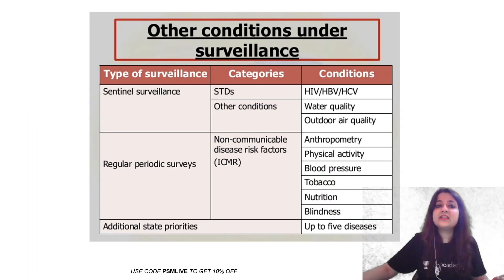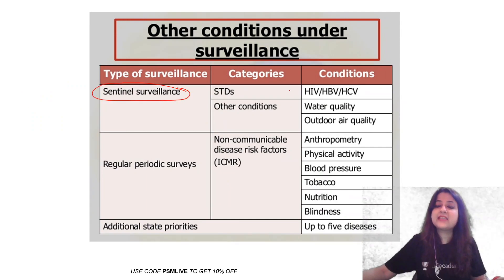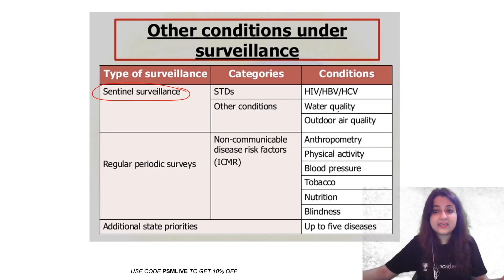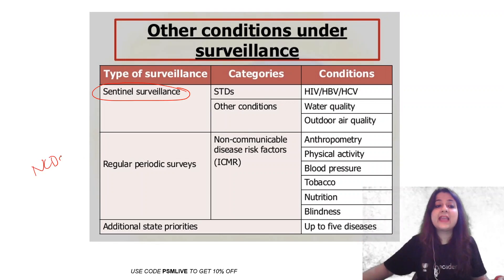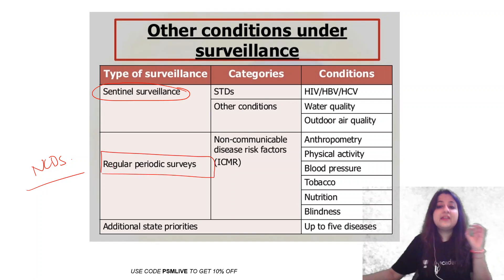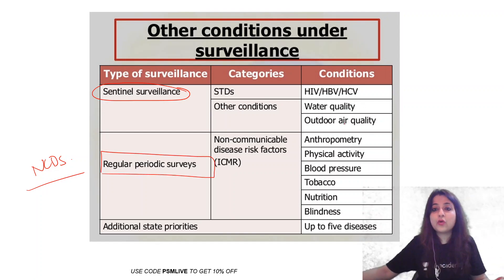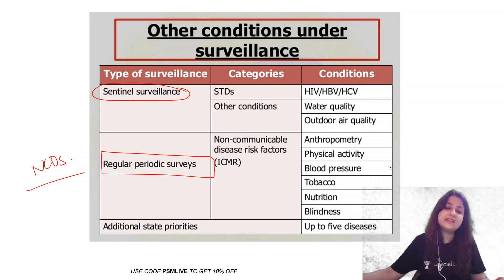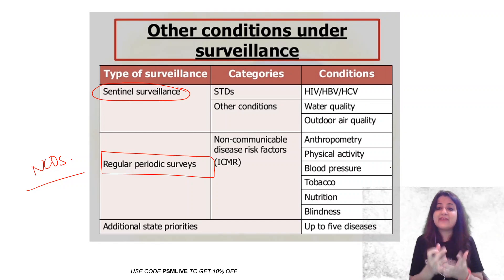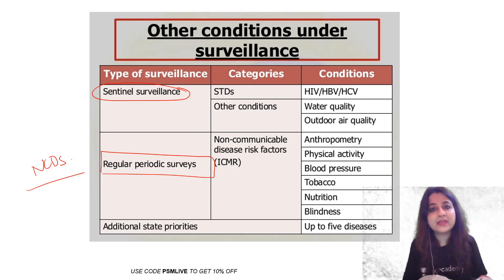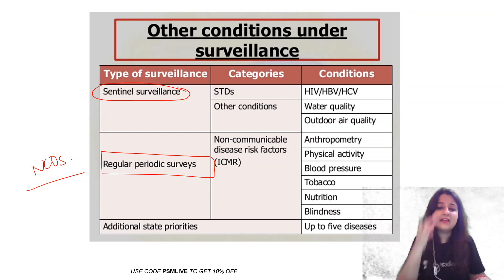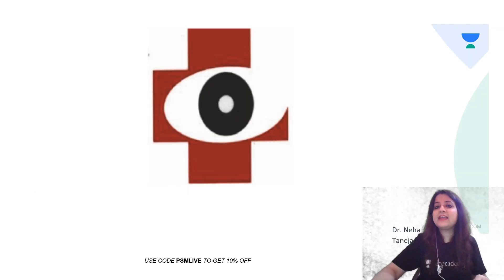There are certain diseases which are under sentinel surveillance, which includes STDs, HIV, HBV, HCV, water quality, outdoor air quality. And most importantly for NCDs, we have a type of surveillance called regular periodic surveys, for which anthropometry and biochemical measurements are done. So that was the logo of IDSP.